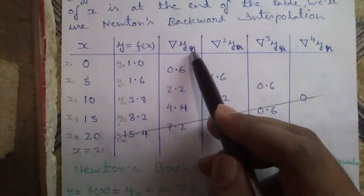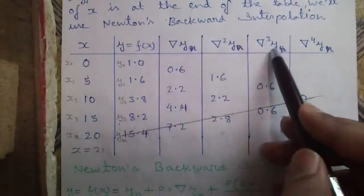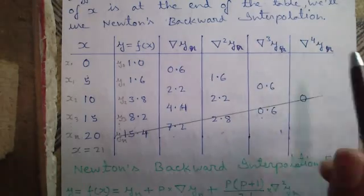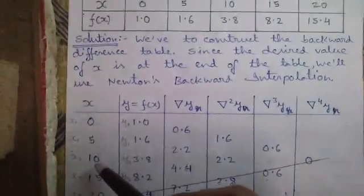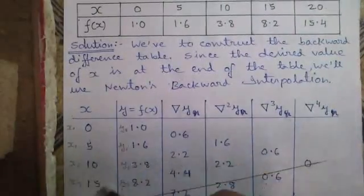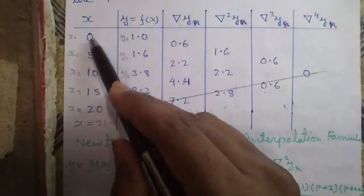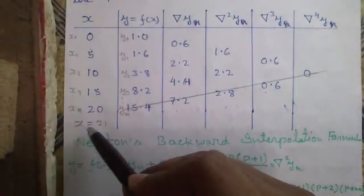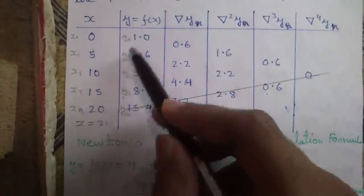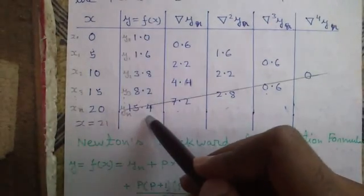Nabla is the inverse of del. So we write columns: Nabla y_n, Nabla² y_n, Nabla³ y_n, and Nabla⁴ y_n. Write all the x values column-wise and all the y values column-wise. The first element in the x column is called x₀, second x₁, x₂, x₃. Similarly, the last element is called x_n, and in the y column: y₀, y₁, y₂, y₃, and the last element y_n.